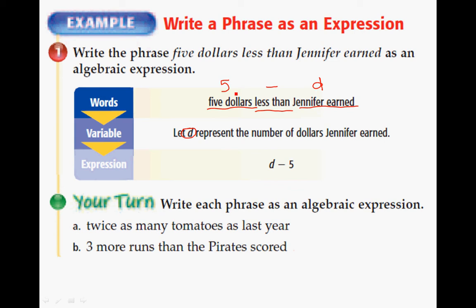Now notice what happens here. If I do this literally, I have 5 minus D. But the expression is D minus 5. And that is because this key word here, than. Whenever you have less than, you have to flip these. You have to flip these terms. Because remember, there is a difference. Subtraction is not commutative. So you have to set it up correctly. And 5 minus D is not the same as D minus 5. So whenever you have the word than, that means you have to flip whatever you've written.